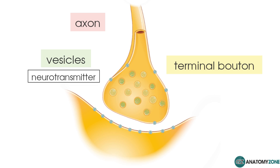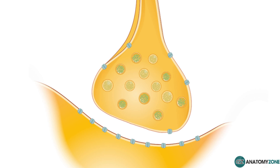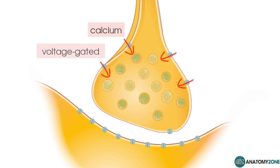How does the chemical within these vesicles actually get into the synaptic cleft? This is all to do with the electrical impulse transmitted down the axon. An action potential arrives in the synaptic bouton, and when this happens, you get an influx of calcium from the extracellular space into the presynaptic nerve ending. The change in voltage across the membrane causes these calcium channels to open — this type of channel is called a voltage-gated channel because it's dependent on the voltage across the membrane.